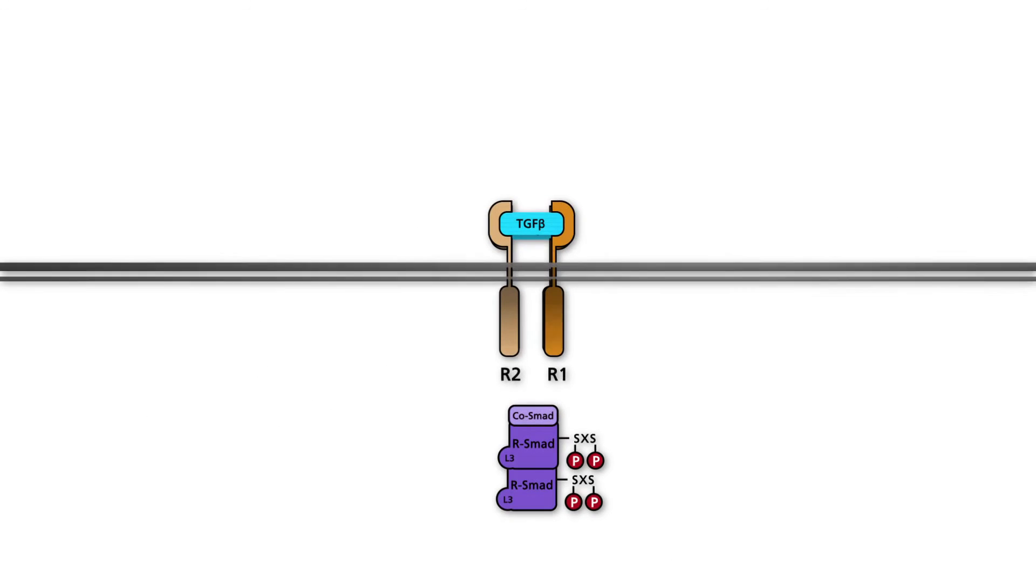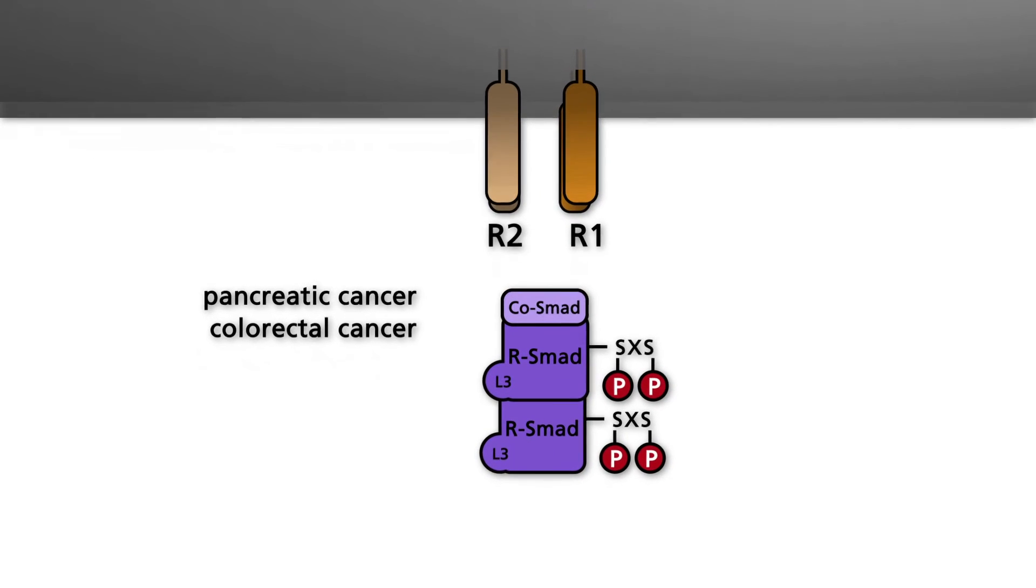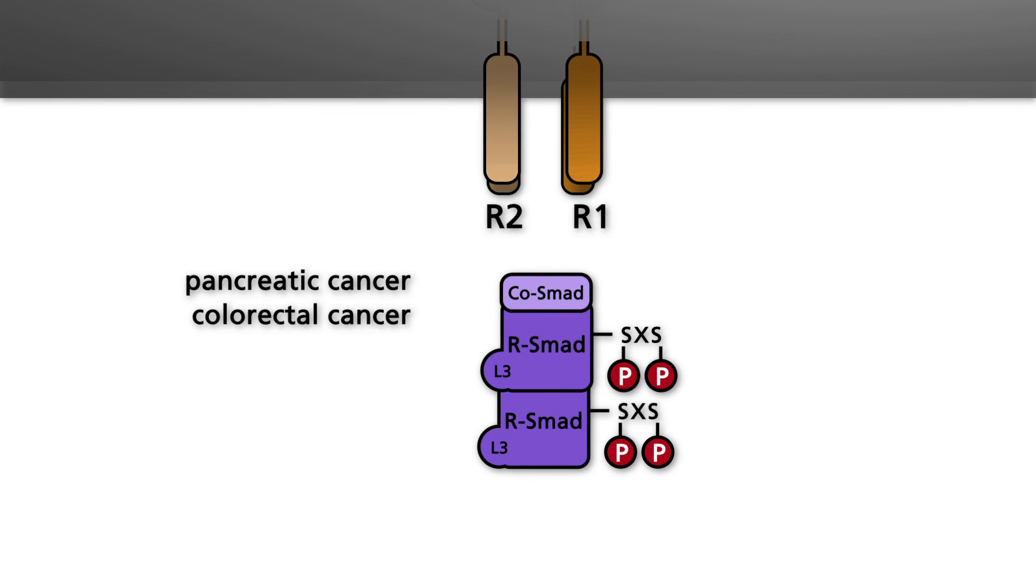In half of pancreatic cancers and one-third of colorectal cancers, both alleles of the SMAD4 gene are lost or inactive. Thus, the SMAD4 gene behaves like a classic tumor suppressor gene. The SMAD4 gene is also mutated in the germline of a subgroup of patients with the hereditary disease familial juvenile polyposis, which predisposes to colorectal cancer.